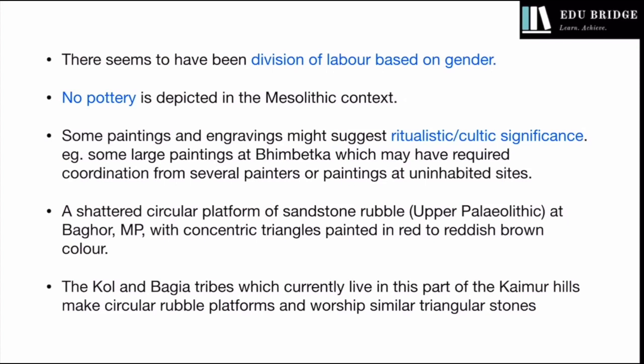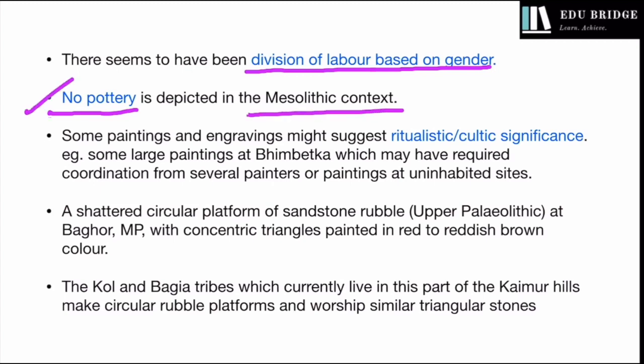Some interpretations: there seems to have been a division of labour based on gender. Also note that in the Mesolithic period, there is no pottery, because pottery first appeared during the Neolithic period. Why? Because man felt the need for storage when he started practicing agriculture from the Neolithic age onwards. When grain was harvested, there was no utensil to store it, so he started making pottery. Hence, there is no question of pottery existing during the Mesolithic period.